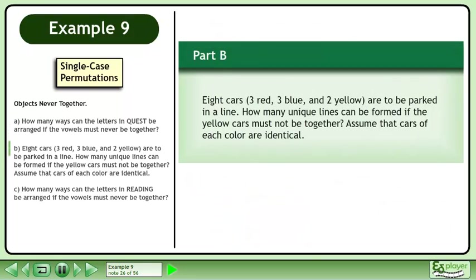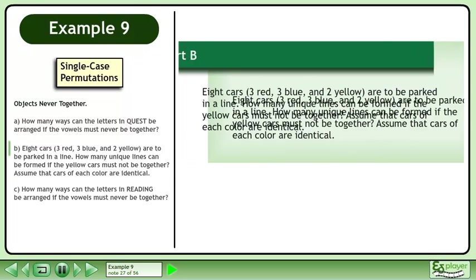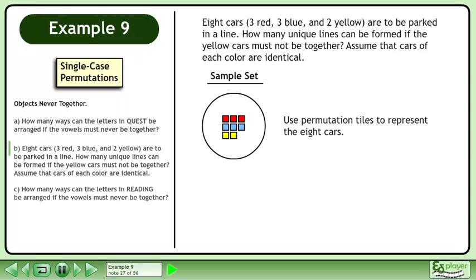Now we'll move on to Part B. Eight cars — three red, three blue, and two yellow — are to be parked in a line. How many unique lines can be formed if the yellow cars must not be together? Assume that cars of each color are identical. Use permutation tiles to represent the eight cars.